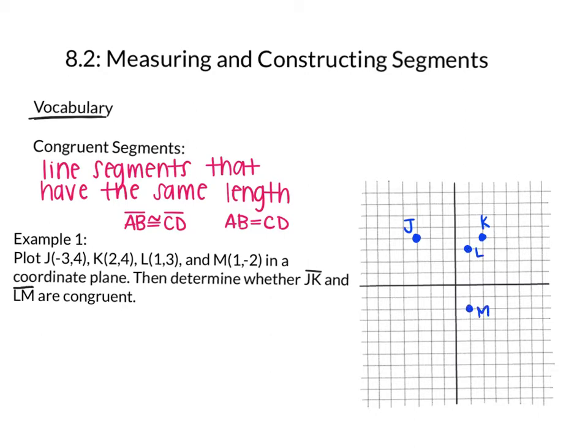Now I'm going to draw the segments that we're actually asked to find. I want to know whether JK and LM are congruent. So I'm going to grab my ruler or straight edge if I don't have a ruler, and I'm going to draw a segment JK. That would be connecting J and K. And segment LM. So that would be connecting L and M.